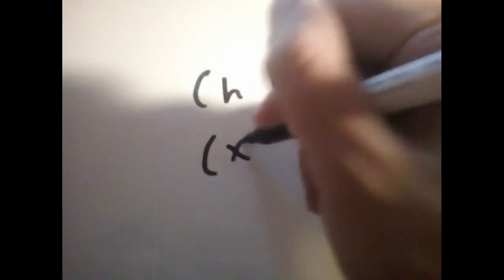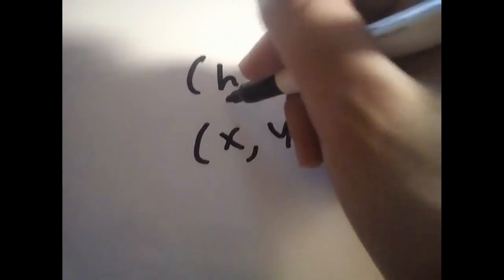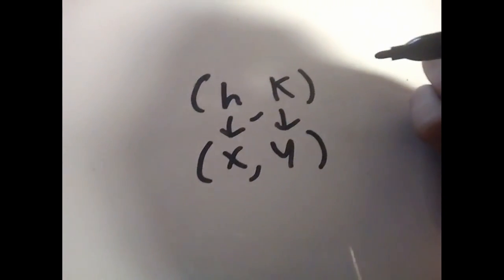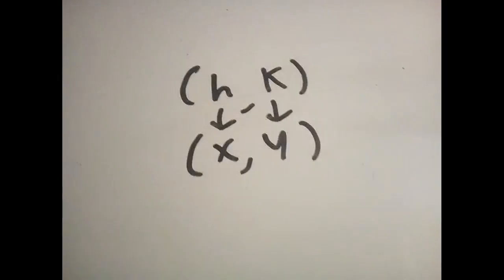h being in the x-coordinate's position and k being in the y-coordinate's position. This is important to know when finding the center of the circle, which is in the form of h comma k.